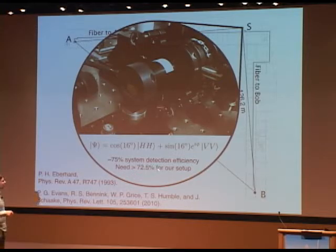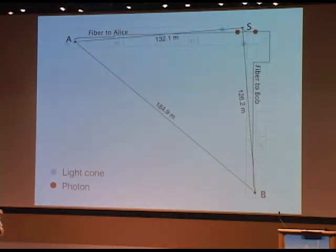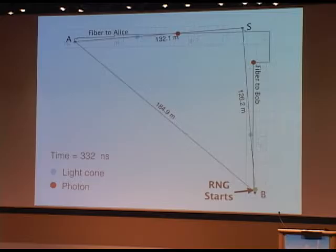For our setup, we need to have more than 72.5% total system detection efficiency, not two-thirds, because we have noise in our detectors. This is actually the kind of bound that we need to cross in order to violate the inequality. I'm going to actually show you a diagram of what's going on with our experimental animation. At T equals zero, a pair of photons are born. As you saw, they travel out, and they have to go along these fiber optic cables that are strung up in the hallway. They're traveling at two-thirds the speed of light because they're in glass.